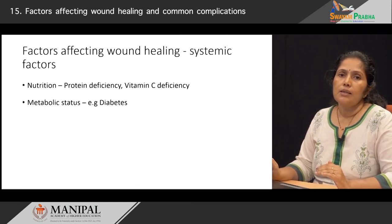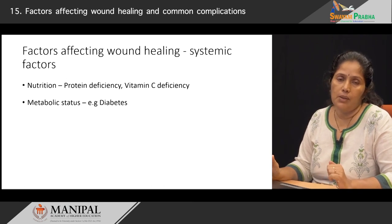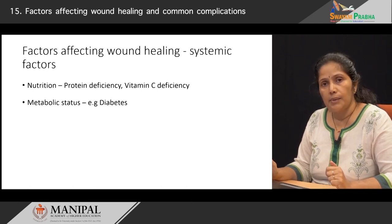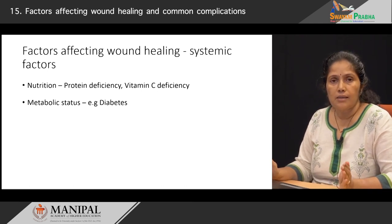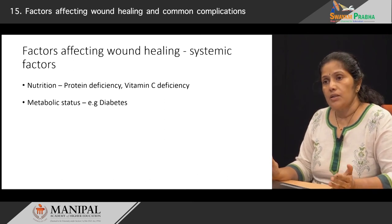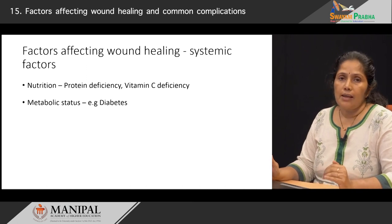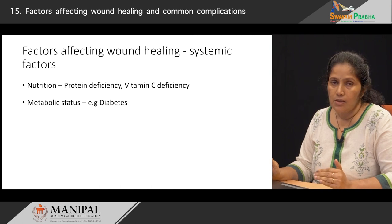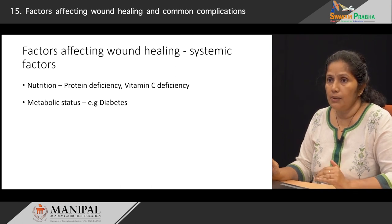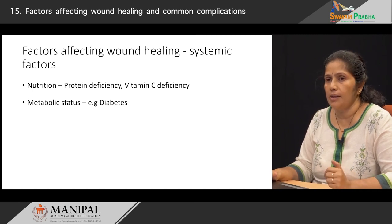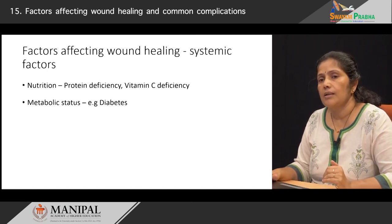Certain diseases affecting the metabolic status of the patient — high among this list is diabetes. We all know that in diabetics, wounds heal much slower than in other patients. Why is it so? Diabetic patients can have some amount of microangiopathy, some vascular diseases, and also the high sugar levels may impede the functioning of neutrophils — another reason that has been proposed in these patients.